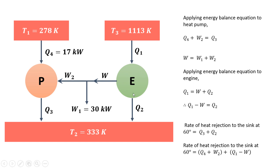Now applying energy balance to the heat engine: incoming equals outgoing. Heat supplied to the engine is the input; some of that produces work and some is rejected as heat. So Q1 = W + Q2, or Q2 = Q1 − W. The heat rejected from both the heat engine and the heat pump goes to the sink at 333 Kelvin, giving total heat rejected = Q3 + Q2, where Q3 = Q4 + W2 and Q2 = Q1 − W.